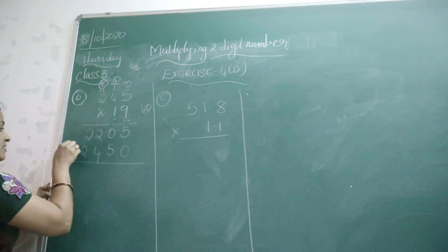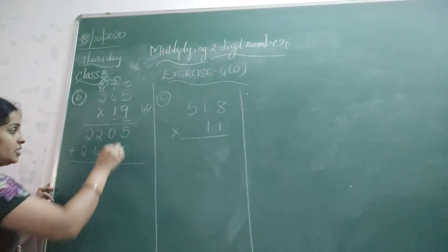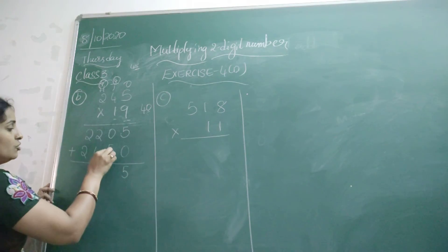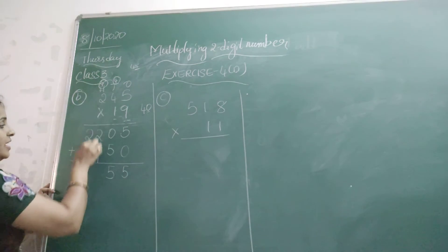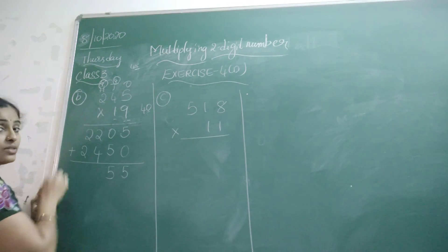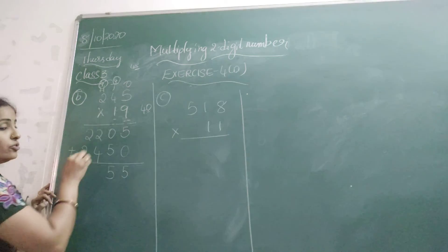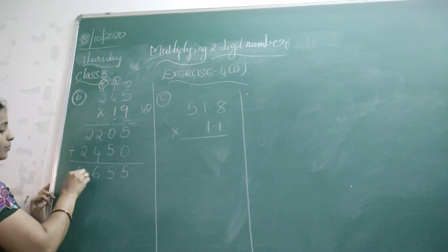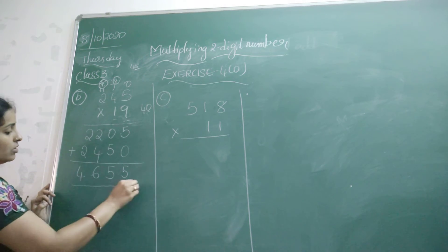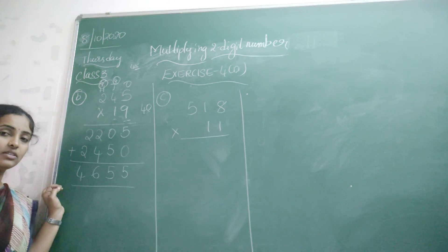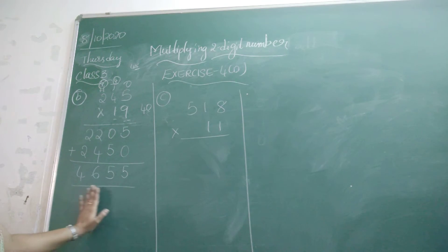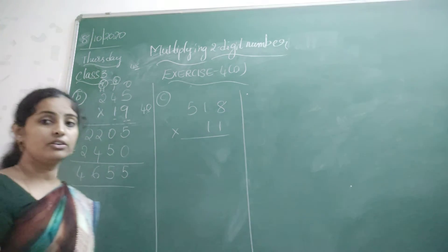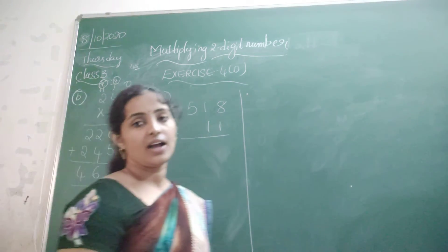Now add the given numbers. 5 plus 0 is 5. 0 plus 5 is 5. 2 plus 6 is 8 — wait, that gives 6. 2 plus 4 is 6. 2 plus 2 is 4. So the answer is 4,655. That is the required answer.